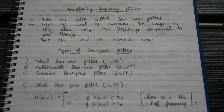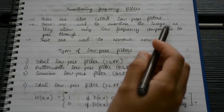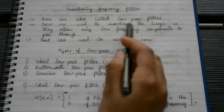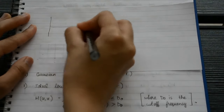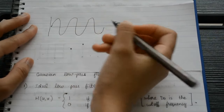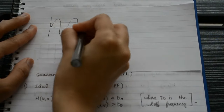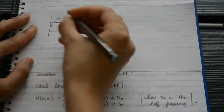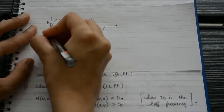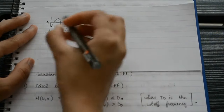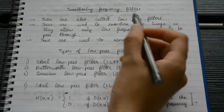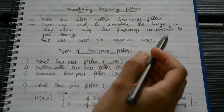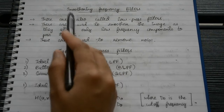Now let's look at the different types of frequency filters. The first type is smoothing frequency filters, also called low pass filters, because they allow only lower frequencies to pass through. They remove the high frequency components and allow only lower frequencies, which is why they are used to smooth the image.